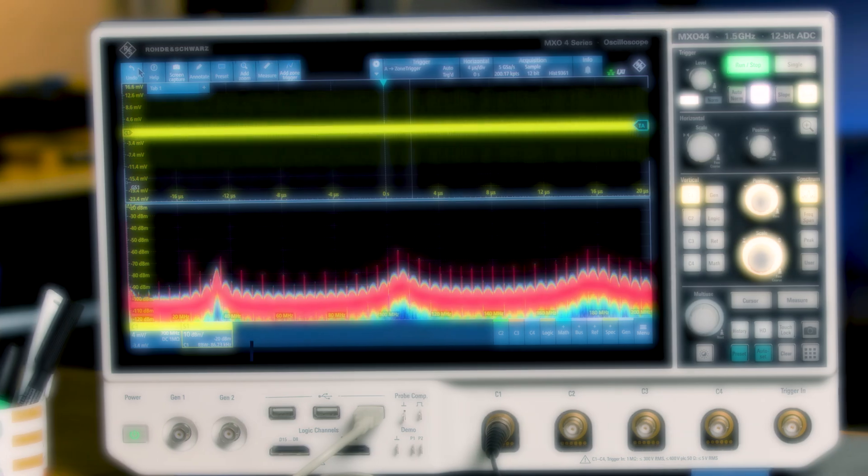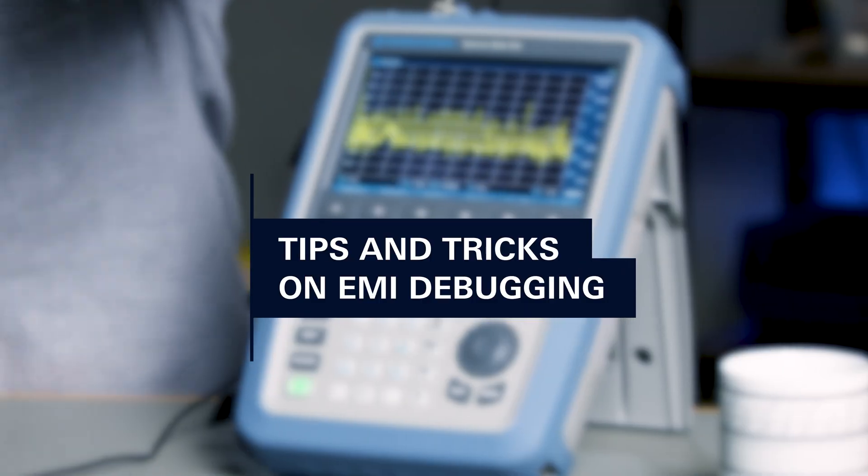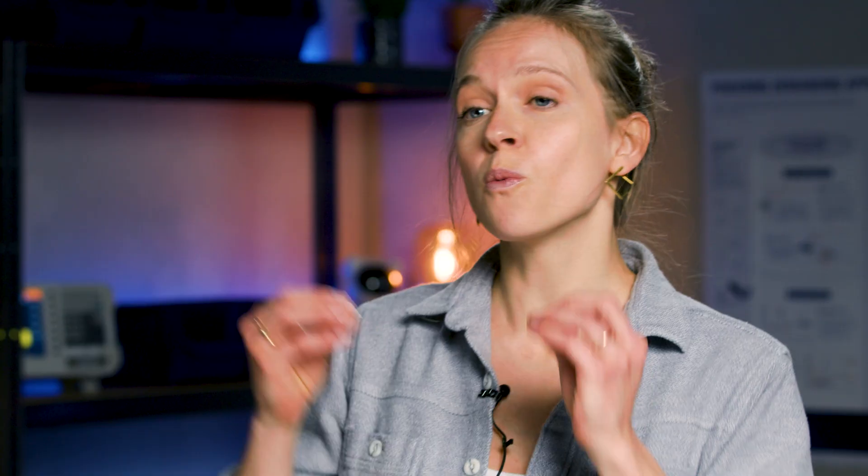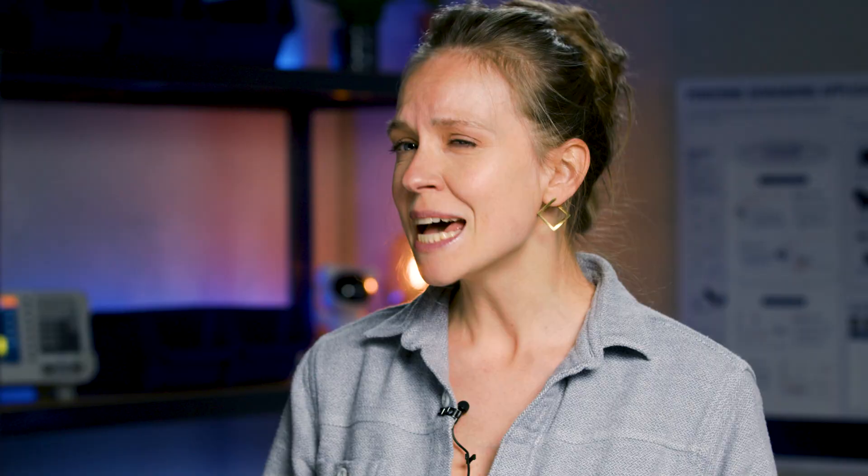Electromagnetic interference or EMI occurs when one electronic device emits unwanted electromagnetic signals. These signals can affect another device, potentially degrading its performance or completely paralyzing its function. So it's critical to identify and mitigate these signals early, especially in pre-compliance testing.